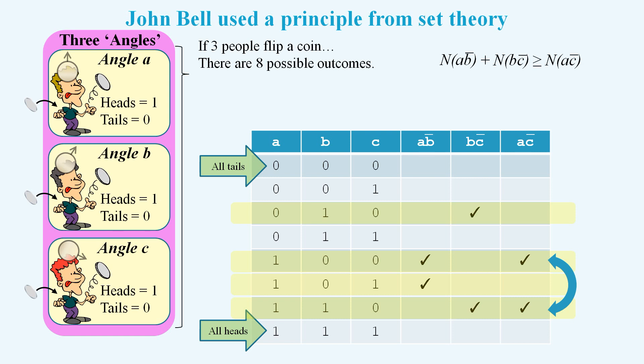But what if we set up some trials where just two people flip a coin at any one time? On one side we could select between angle A and angle B, and on the other side we could select between angle B and angle C. From all the trials with angle A and angle B, we can get the number where A is heads and B is tails. And from the trials with angle B and angle C, we can get the number where B is heads and C is tails. And from the trials with angle A and angle C, we can get the number where A is heads and C is tails.